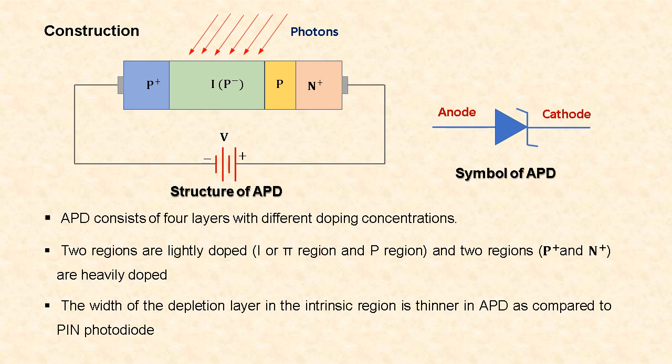Next, let us see the construction of avalanche photodiode. Avalanche photodiode consists of four layers with different doping concentrations. These layers are p-plus region, i-region, p-region, and n-plus region. The intrinsic (pi) region and p-region are lightly doped, while the p-plus and n-plus regions are heavily doped. The intrinsic region is made of lightly doped p-type material. The width of the depletion layer in the intrinsic region is thinner in avalanche photodiode compared with PIN photodiode. Avalanche photodiode is operated under high reverse bias condition — the negative terminal is connected to anode and positive terminal is connected to cathode.